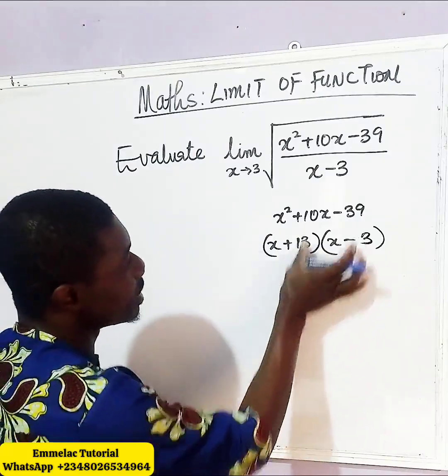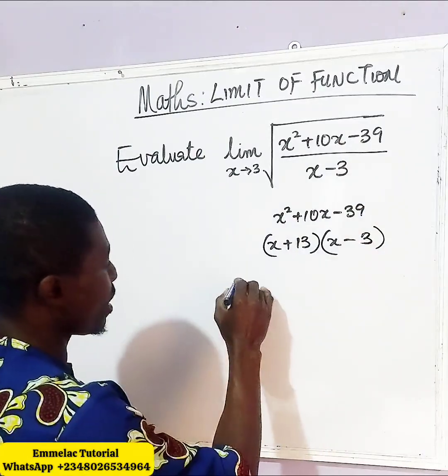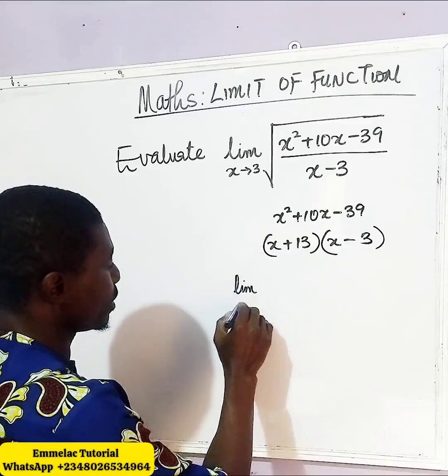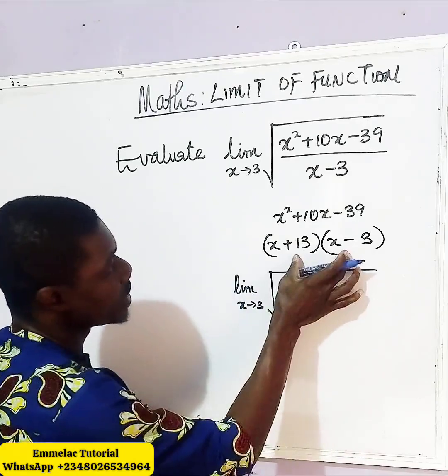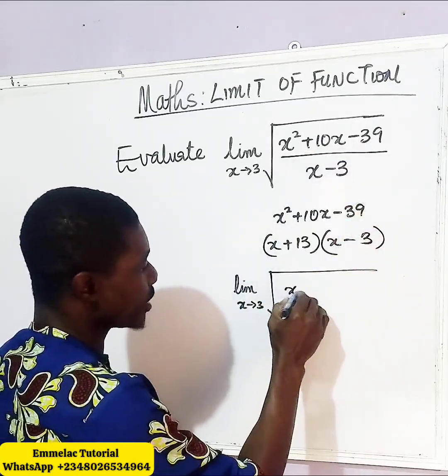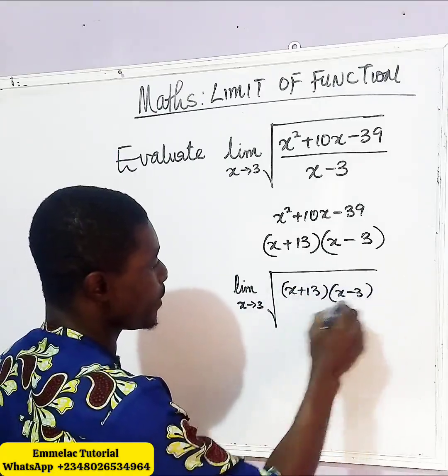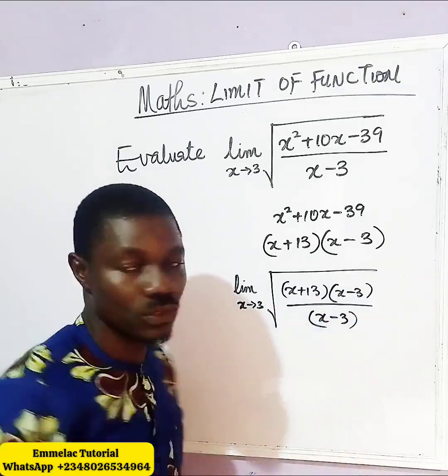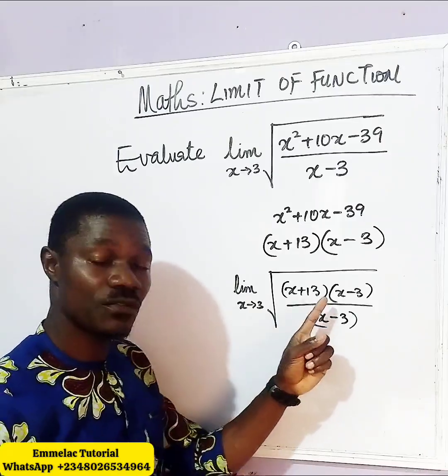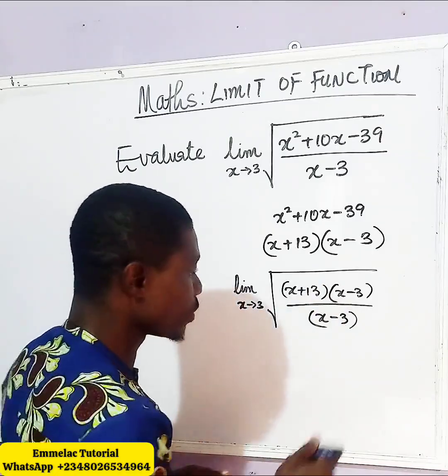Now let us replace this quadratic with these two terms. So, replacing this we have x plus 13 into x minus 3 all over x minus 3. At this point now you can see we have a similar term between the numerator and the denominator.